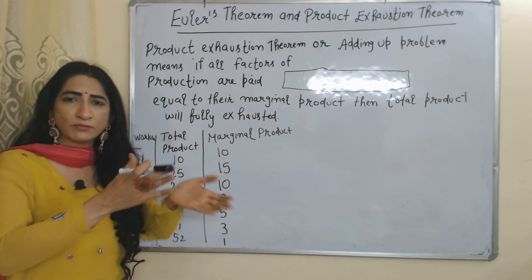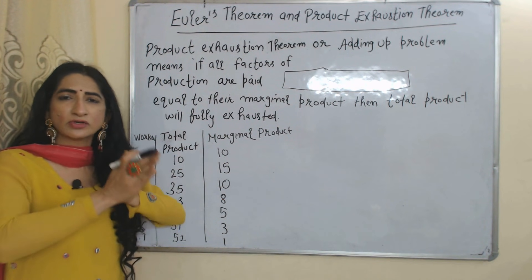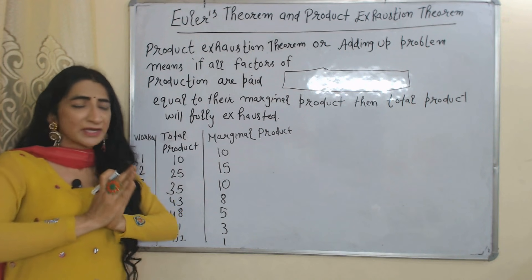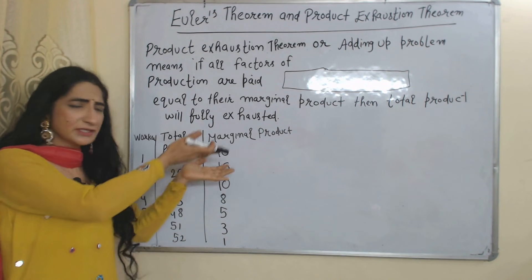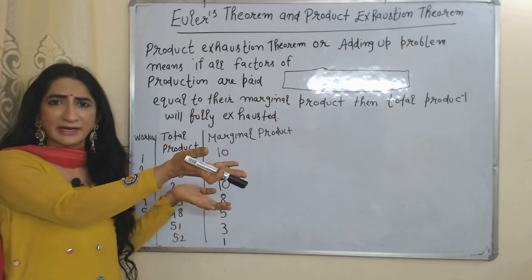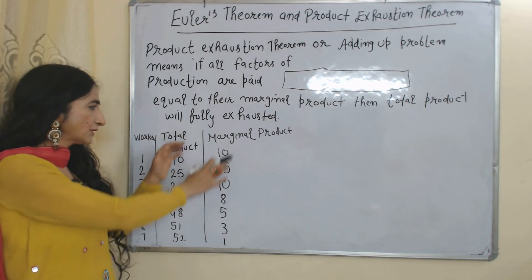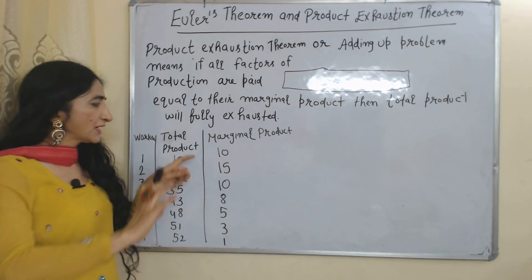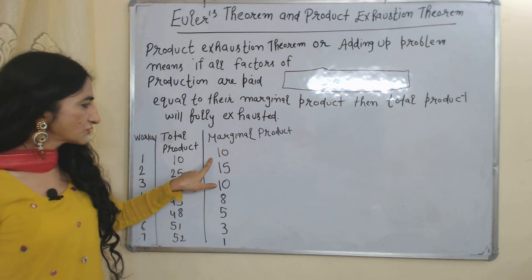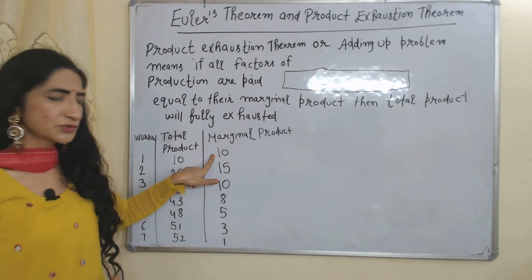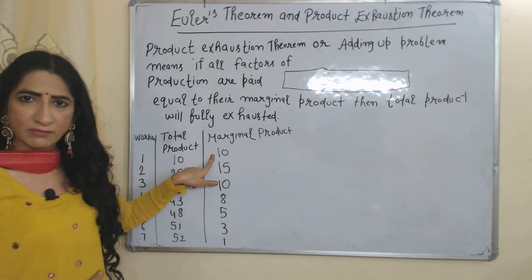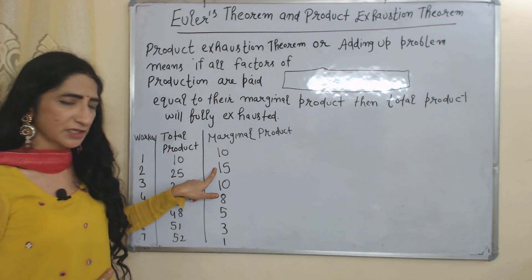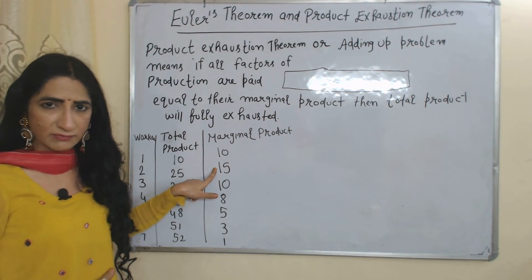Total product will fully vanish. But why? What is the logic behind it? As we know, total product is made up of marginal product. Here you can see the marginal product of the first worker is equal to 10, and the marginal product of the second worker is equal to 15.